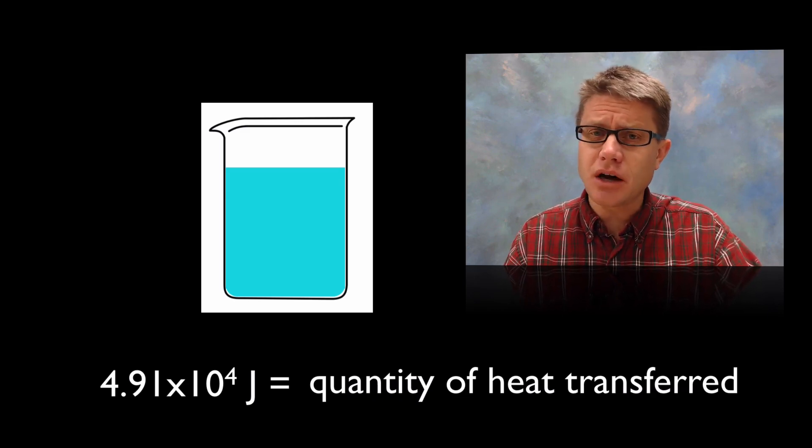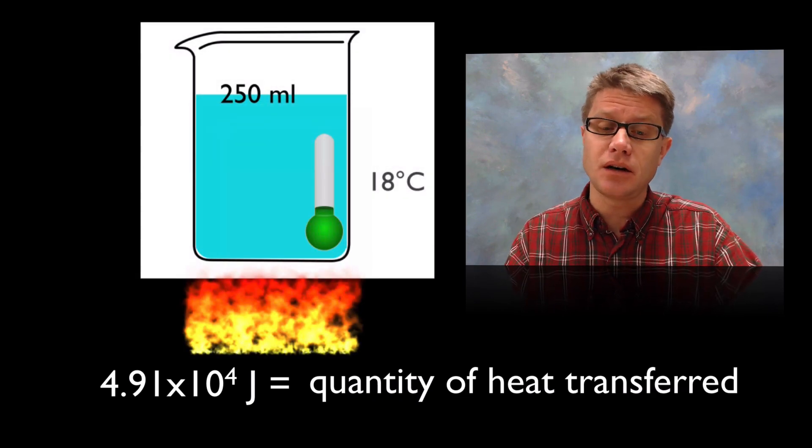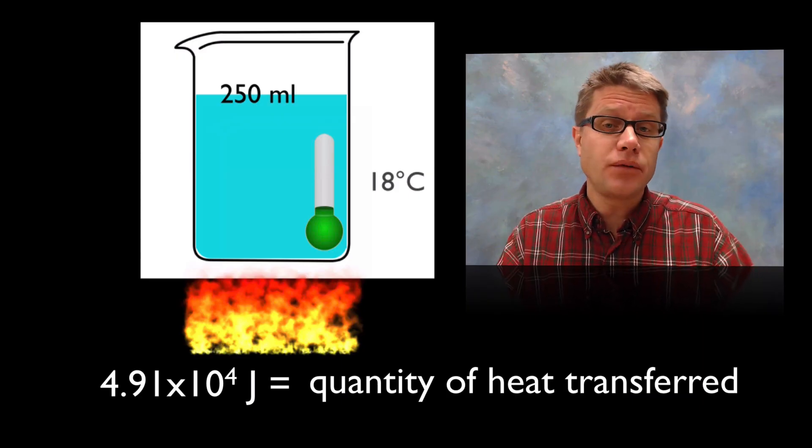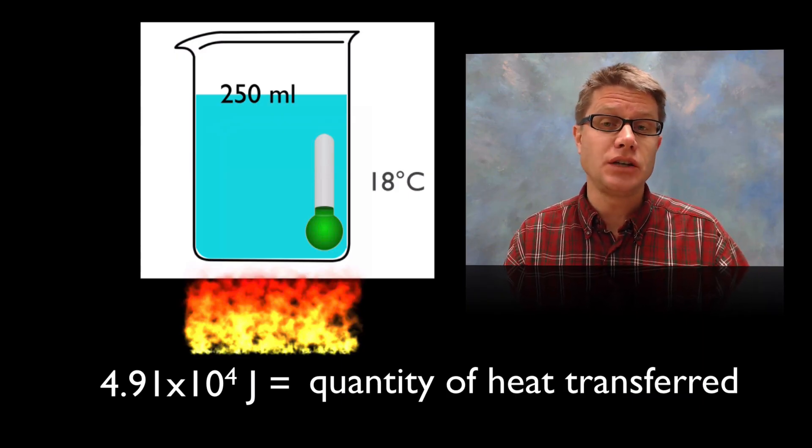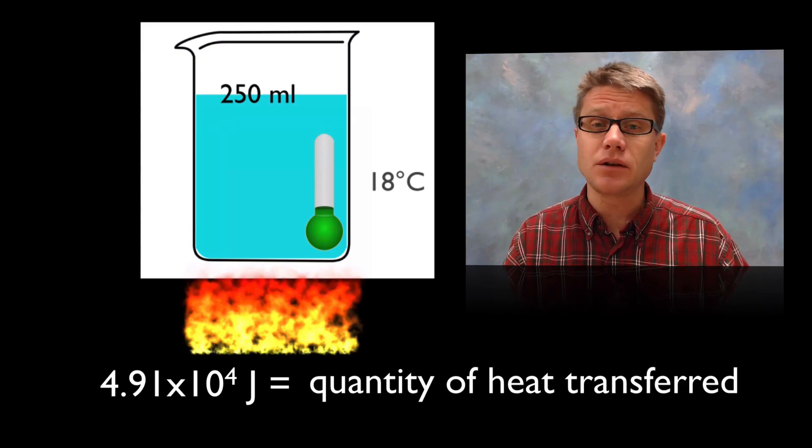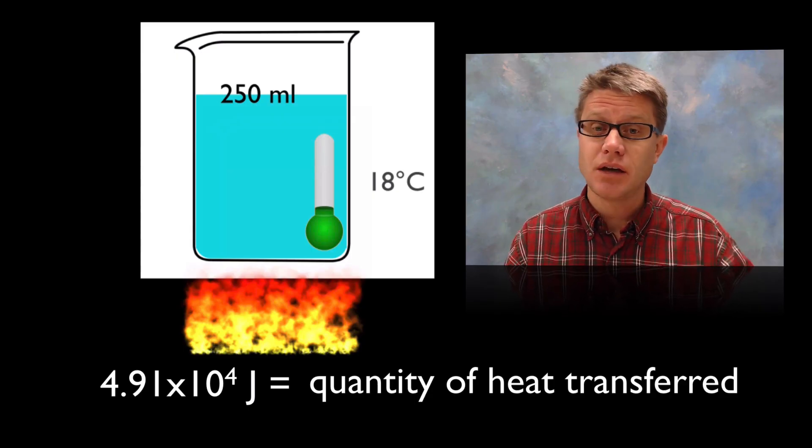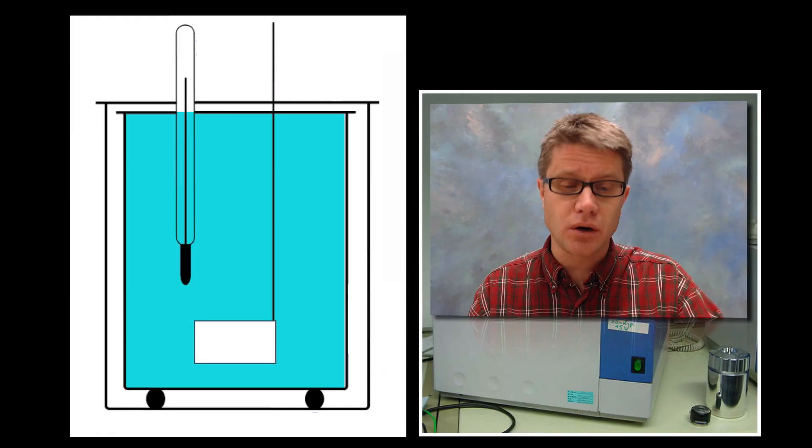And so where did that energy come from? It came from the heating of that water. And so if we know how much the water changes in its temperature and we know its mass, then we can figure out how much energy is released. And that's really how a calorimeter works.